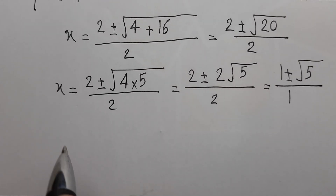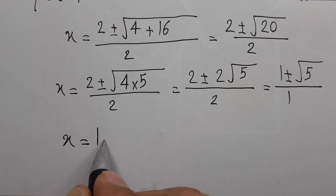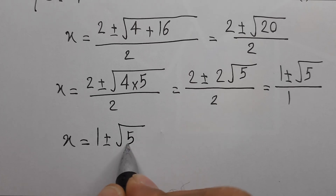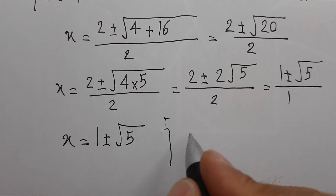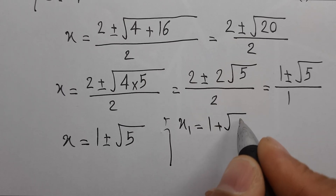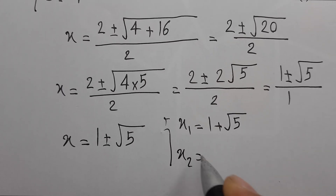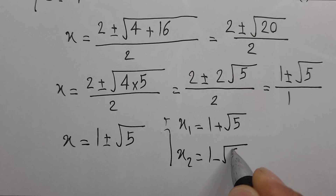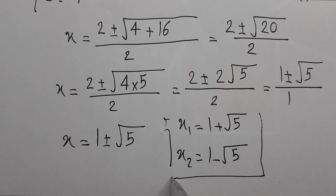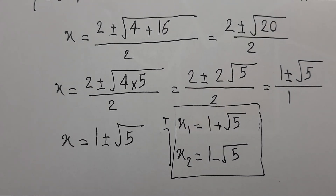So x equals 1 plus or minus square root of 5. x1 is 1 plus square root of 5 and x2 is 1 minus square root of 5. If you like it, don't forget to subscribe. Goodbye guys!